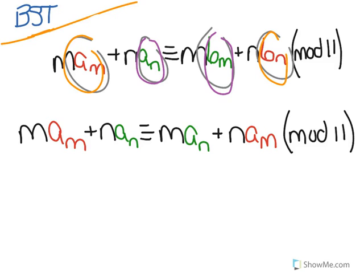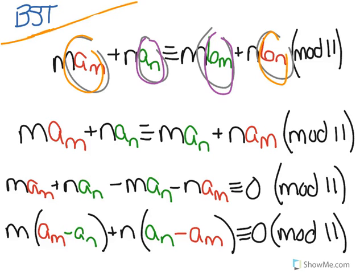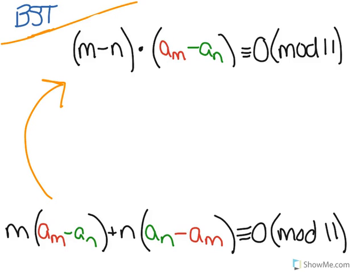So then we can subtract everything to one side and get M times A sub M plus N times A sub N minus M times A sub N minus N times A sub M is congruent to 0 modulo 11. Then we can factor out some things and regroup terms and get M minus N in parentheses times A sub M minus A sub N in parentheses is congruent to 0 modulo 11.